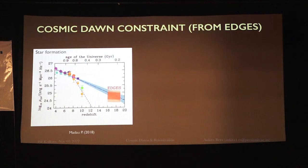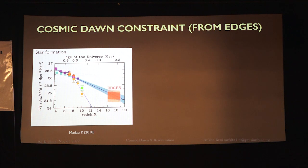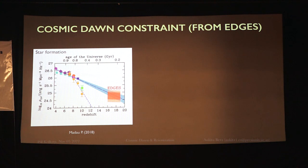Our first observational constraint is from Cosmic Dawn. As mentioned, the Lyman-Alpha photons are required to couple the spin temperature to the gas kinetic temperature. Work by Madau has shown that the Wouthuysen-Field coupling inferred from EDGES is consistent with the linear extrapolation of HST observations. So we have taken the extrapolated UV luminosity density for redshift 5 to 20 as our Cosmic Dawn observational constraints.